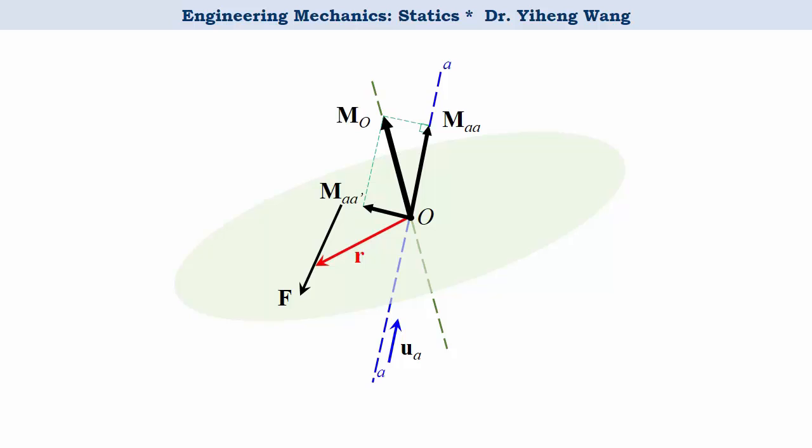As you can probably tell, the M A A component is simply the projection of M O along the A A axis. If we know the angle theta between vector M O and the A A axis, we can determine M A A to be M O times cosine theta.